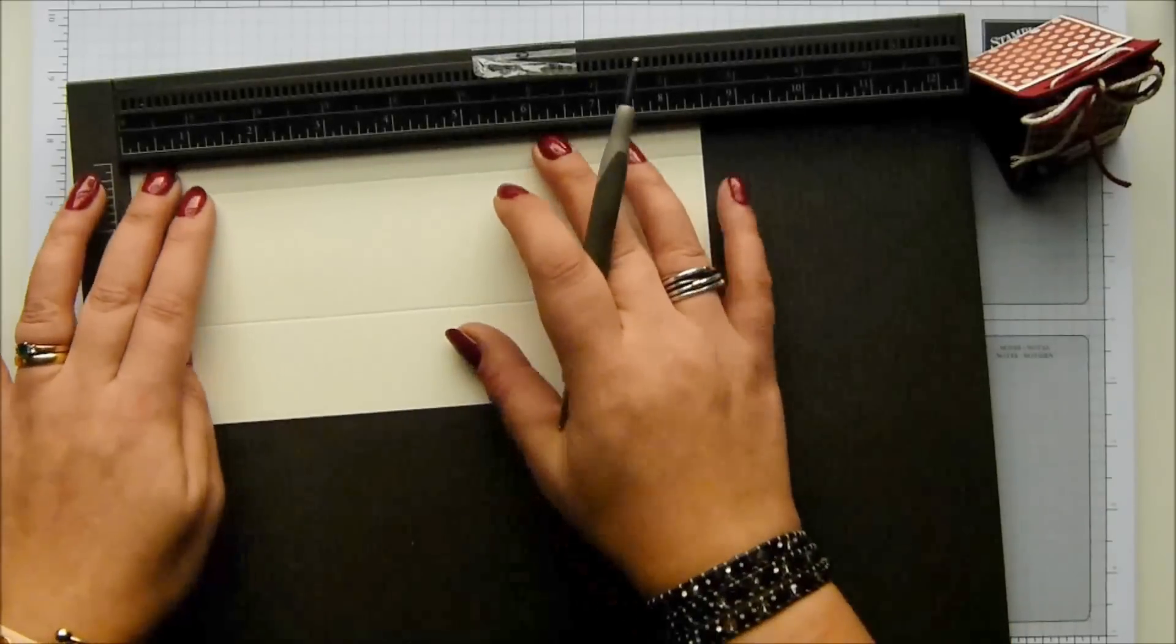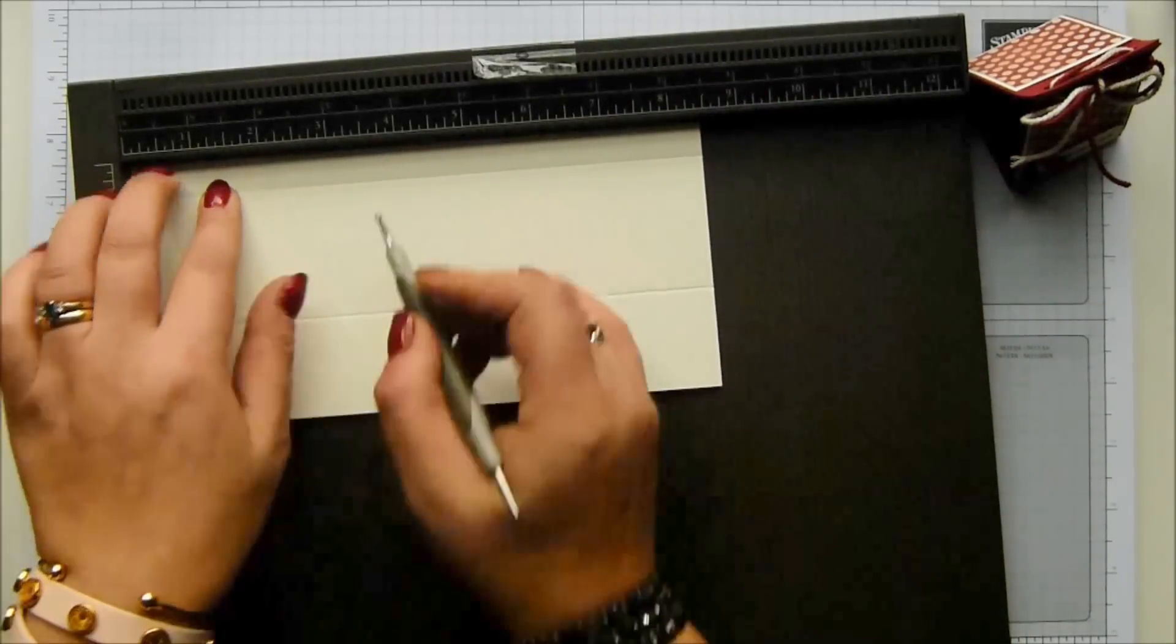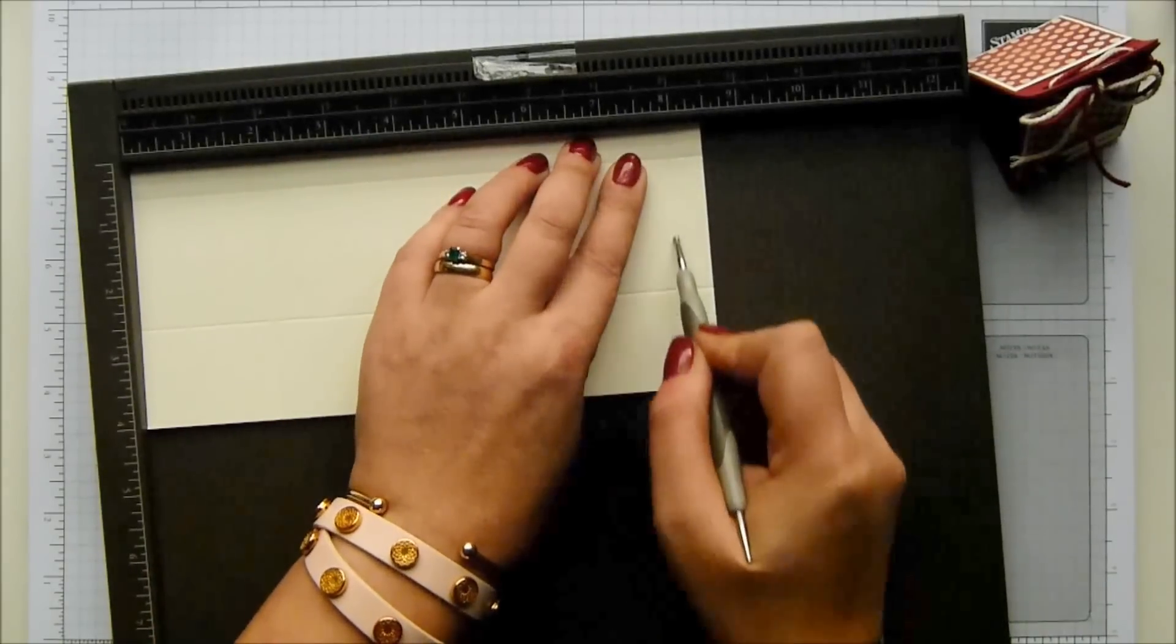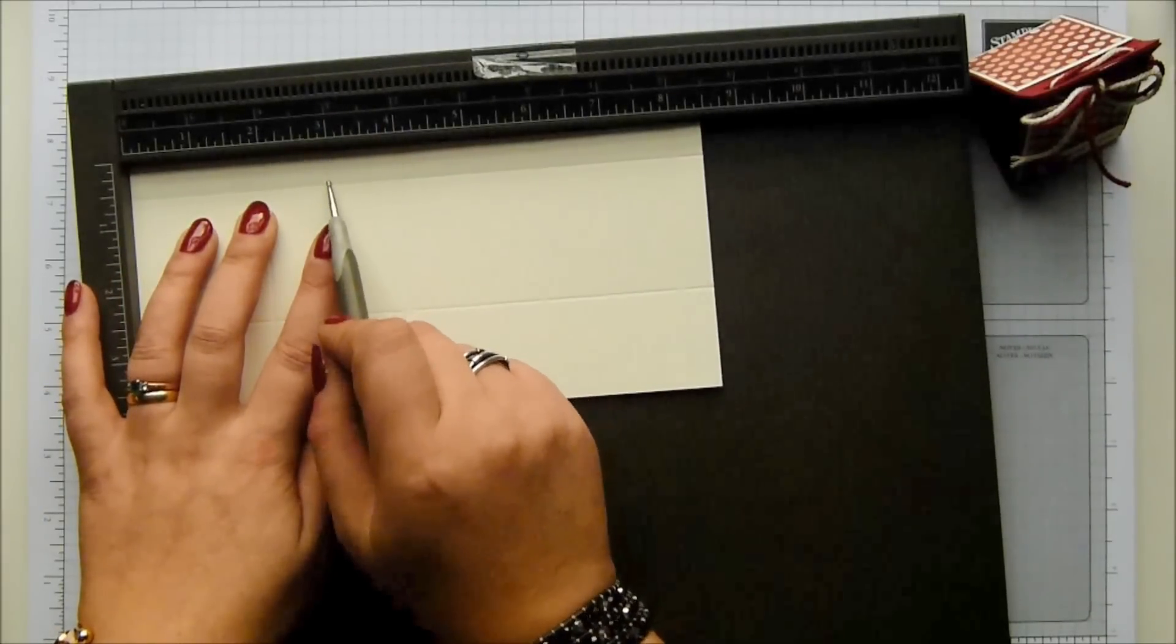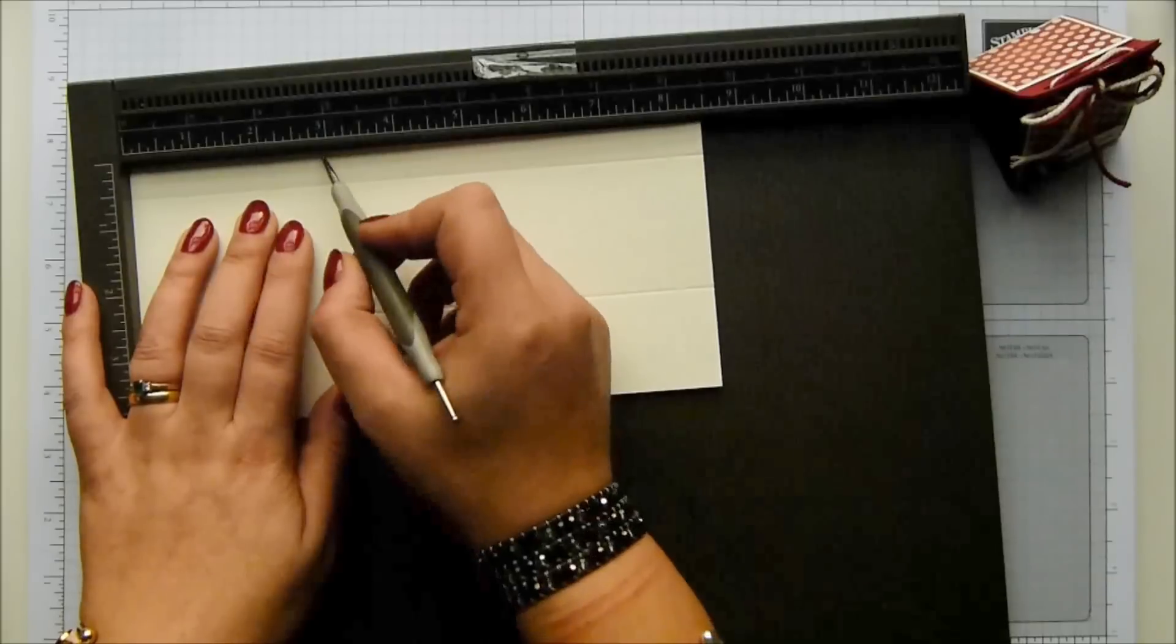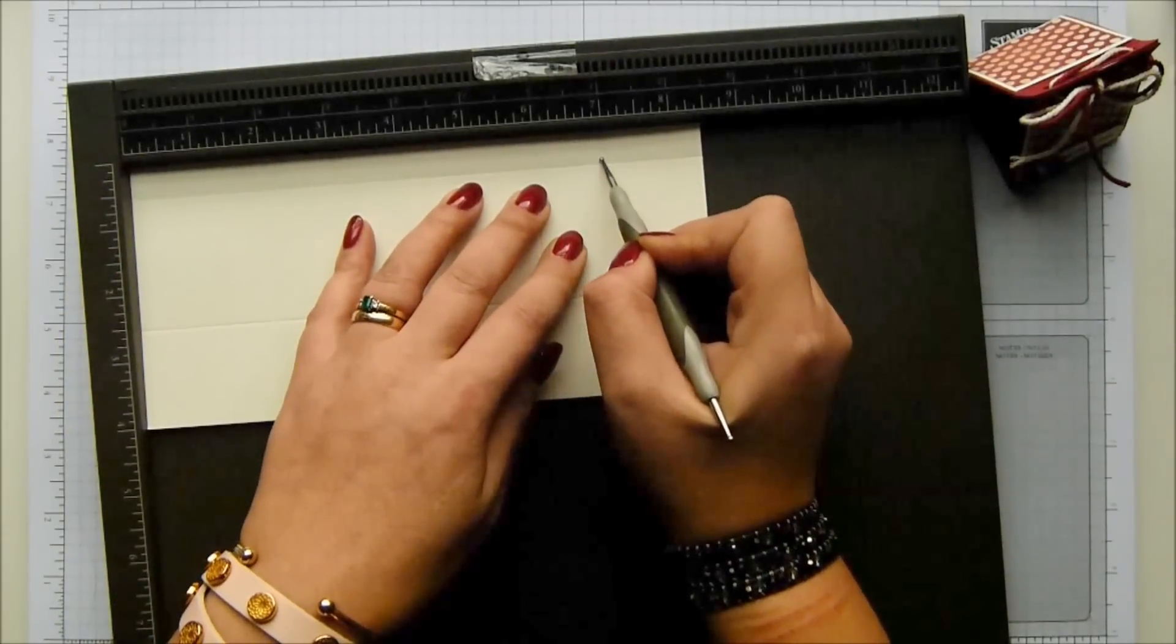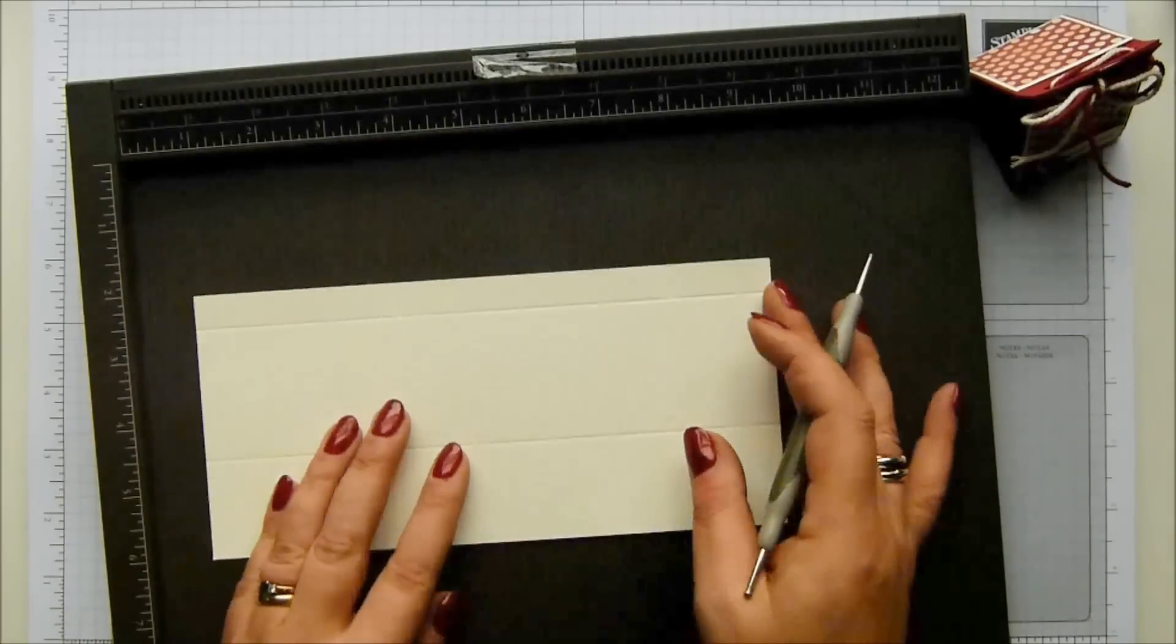Then you turn it round, and we're going to score fully, and then we're going to mark. So we're going to score every two inches at two, four, six, and eight inches, which is five, 10, 15, and 20 centimeters. And then we're going to score down to the first score line at three inches and at seven inches, which in metric is seven and a half and 17 and a half.